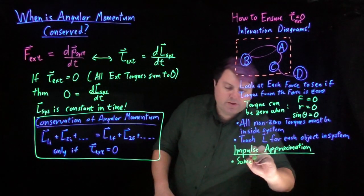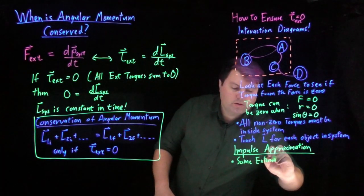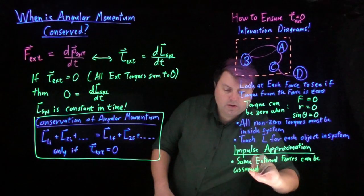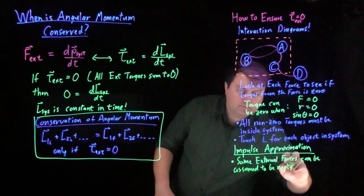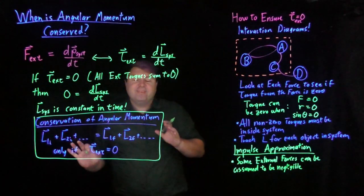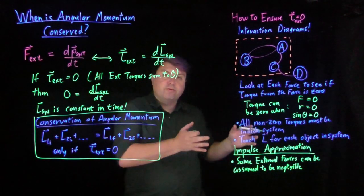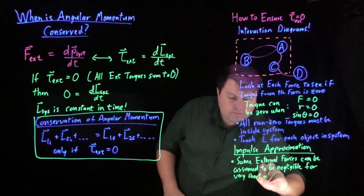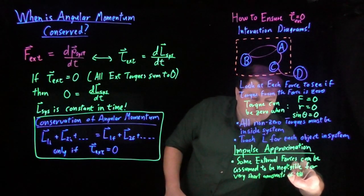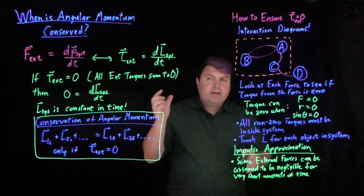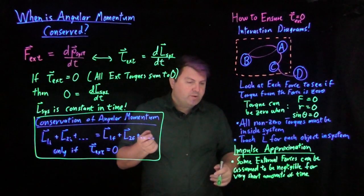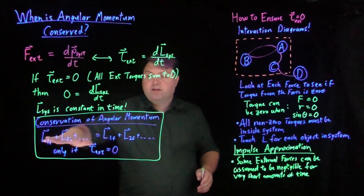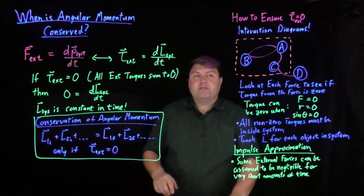We can also look at the impulse approximation, and say that some external forces can be assumed to be negligible. That is, we are going to not worry about them because they're small compared to other forces, but only for very short amounts of time. We are saying for a very specific amount of time, if it's a small force in comparison to other forces, then a very small time times a very small force times r and theta will give us a very small torque, and will not affect our conservation of angular momentum.